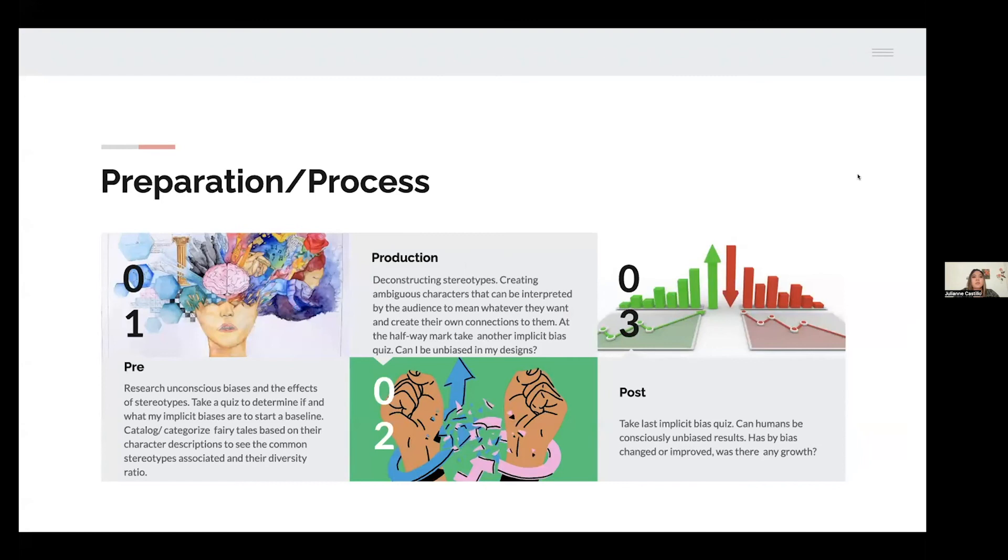In my pre-production, I'm going to do more research based on unconscious bias and the negative effects of stereotypes. In the beginning, I'm also going to be taking a quiz to determine what my implicit bias is and see if I can start a baseline as I continue the project. I also want to catalog and categorize fairy tales based on the character descriptions to see if there are any common stereotypes associated and if there is a diversity ratio.